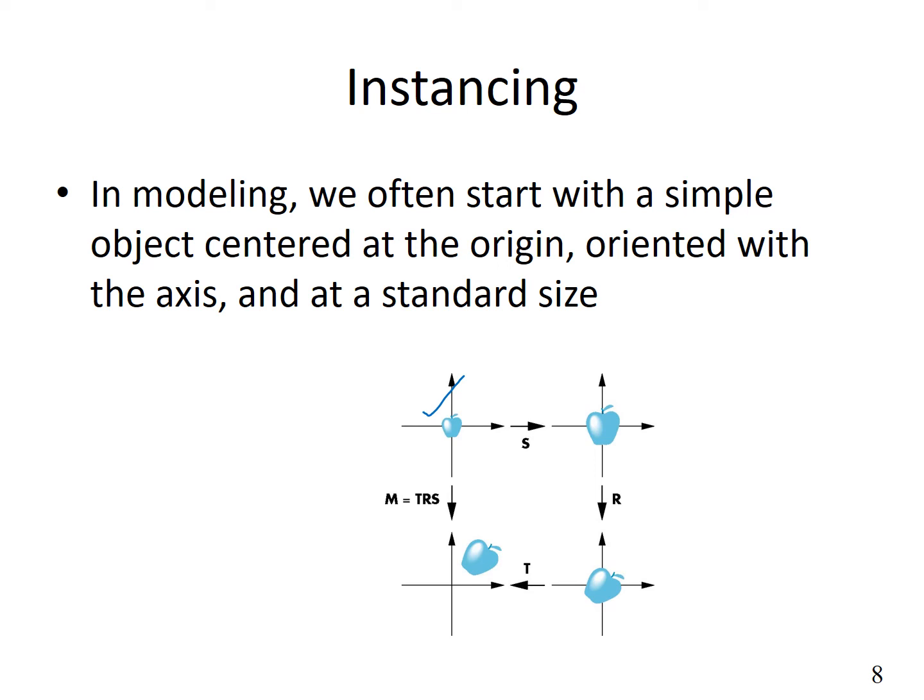Now we might want to generate multiple instances of this apple at different sizes because apples might occur in nature with size variations, and they can be lying in different orientations. We can scale this object, orient it, and then translate it to the desired location.